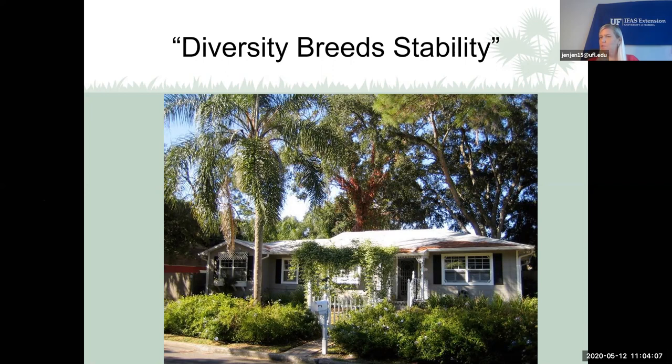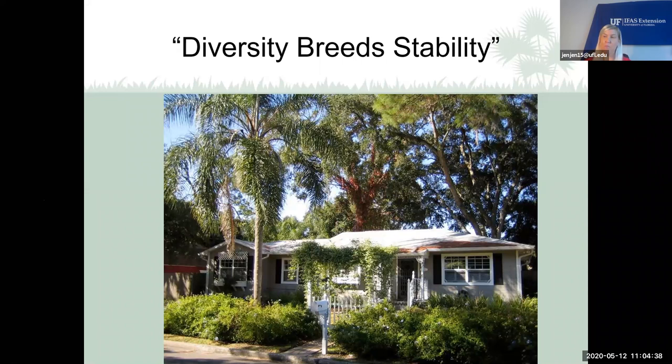A great example is a community in central Florida that had 700 queen palms. There's a disease called Fusarium wilt that spreads through pruning tools. One palm got the disease and before long all 700 had it. If they had diversified with different types of palm trees rather than just queen palms, they probably wouldn't have suffered such a loss.